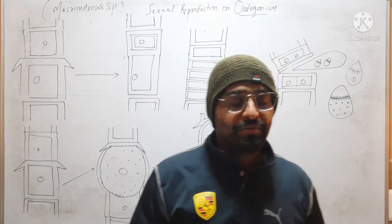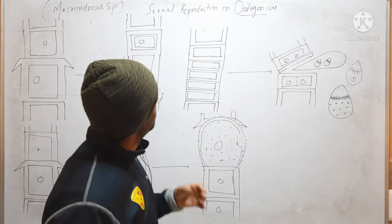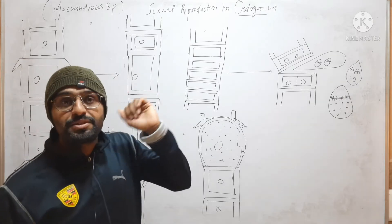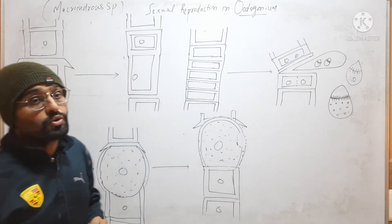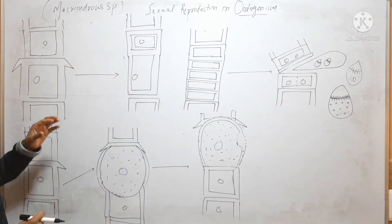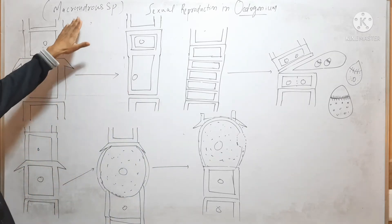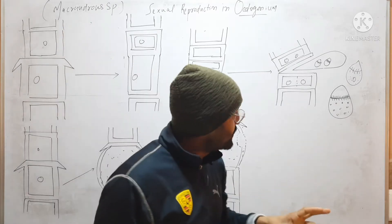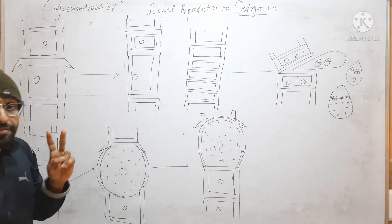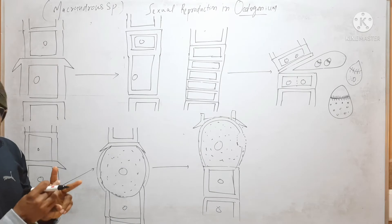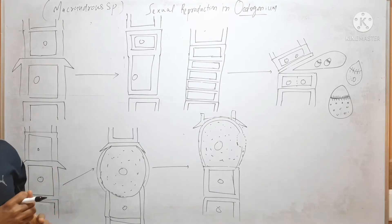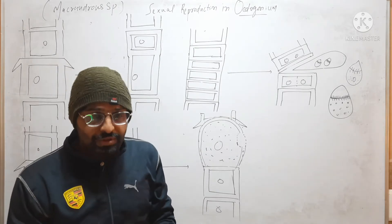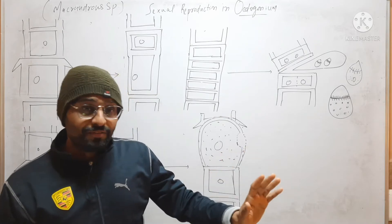Hello friends. In this video we will discuss sexual reproduction in Macroendera species of Oedogonium. Macroendera species is a species in which both the male filament and female filament are similar in morphology but they differ in physiology.